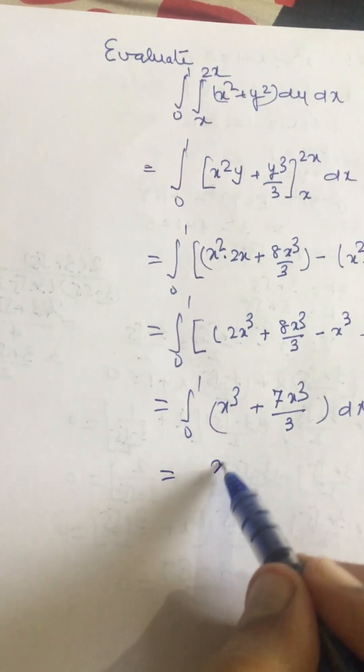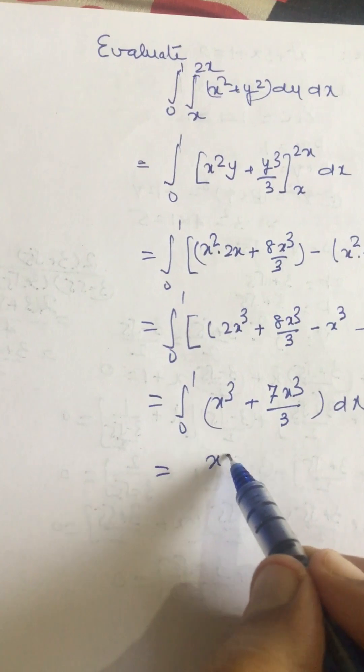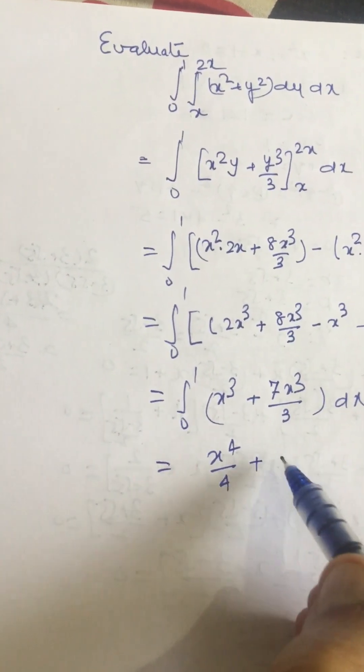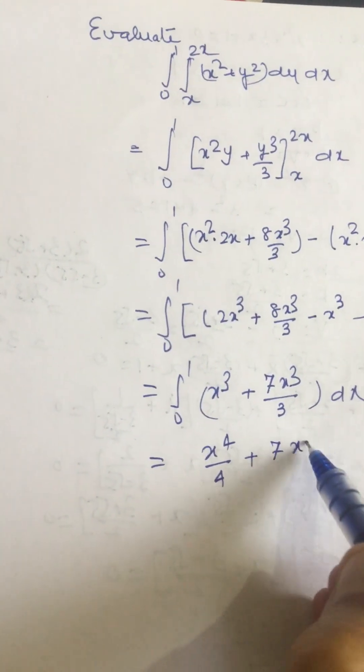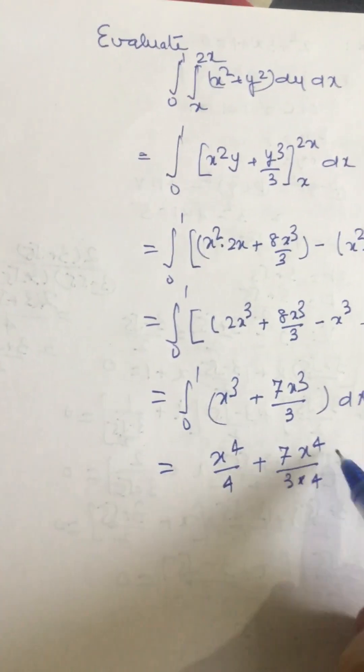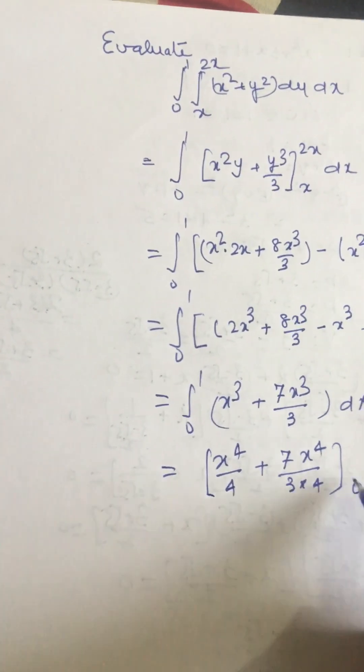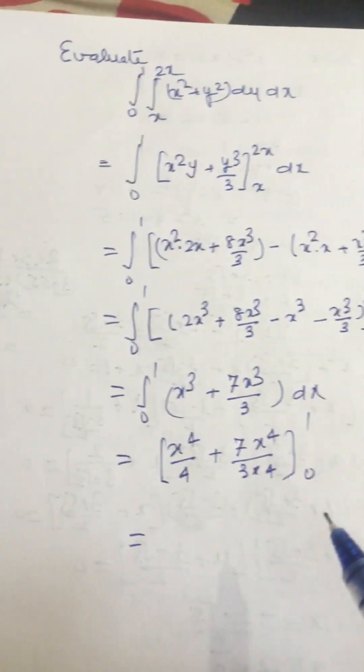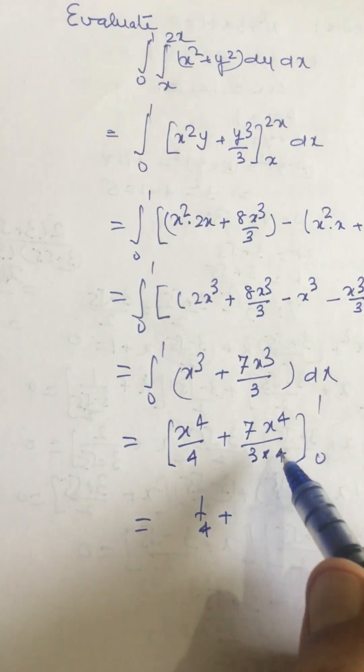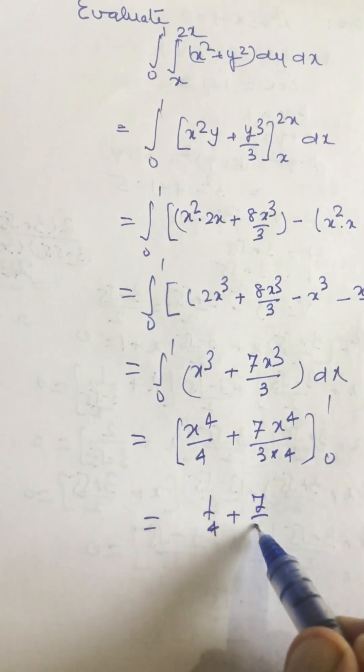So this can be integrated as x to the 4th divided by 4 plus 7x to the 4th divided by 3 into 4, limits are from 0 to 1. Now putting this value 1, we get 1 by 4 plus 7 by 12.